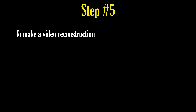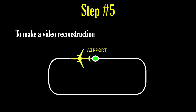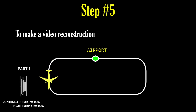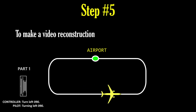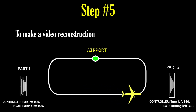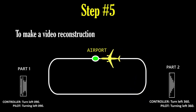Step number five: I make the video reconstruction. I take the animation, the real aviation communications, the text version of communications, and my computer. The editing process works as follows: I take my animation and place phrases of communications at specific points on the timeline. I try to make my video reconstructions as realistic as possible. I also put a text version of every phrase of communications at the bottom of the screen — it helps to understand everything despite radio interferences and unclear speech. And that's all.